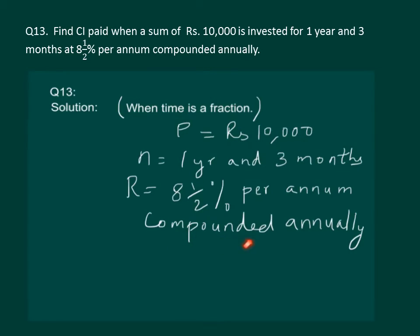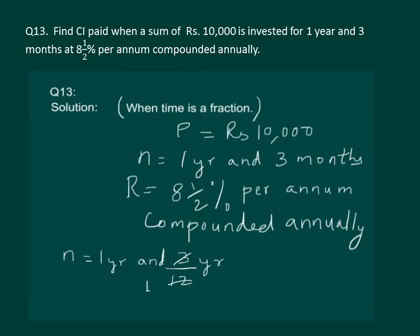It is very important to know that here the rate of interest is compounded annually, so we cannot simply divide the time. To handle such questions, we first consider the whole time in terms of years. We convert three months into years: three months equals three-twelfths of a year, so n equals one year and one-fourth of a year.